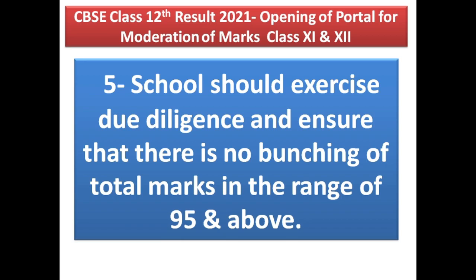The fifth key point is that schools should exercise due diligence and ensure that there is no bunching of total marks in the range of 95 and above. Many teachers and schools think that all their students should score 95 and above, but that is not possible. Every student has individual differences in talent, IQ level, writing capability, and understanding ability. Therefore, we cannot give all students 96, 97, or 98 marks.